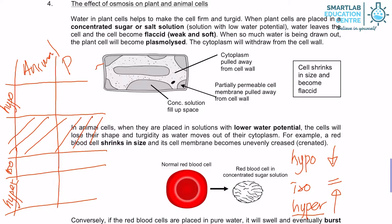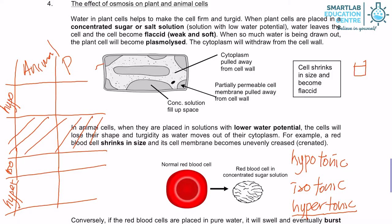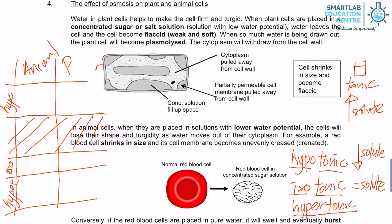Hypo doesn't come on its own. We have the word tonic that follows. Tonic by itself means that it is a drink that is full of nutrients — that means it has high solute. So hypotonic means there is very little solute. Isotonic means equal amount of solute as compared to the cell. Hypertonic means there is very high concentration of solute in that particular solution.